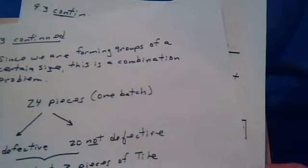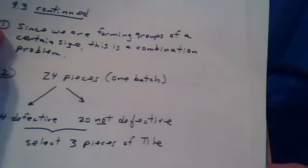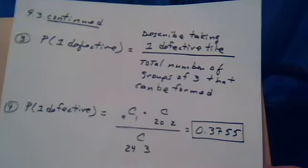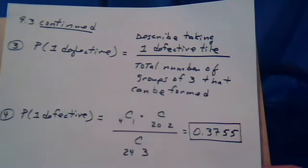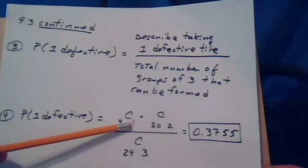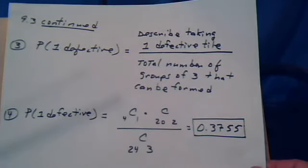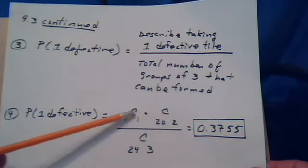Notice there were 20 that were not defective. From that group, we'll take the other two. So the defective plus the two non-defective forms the three that we're taking from the batch. That's the numerator.